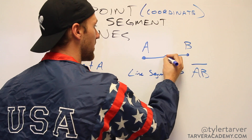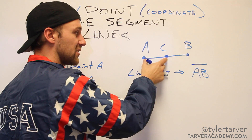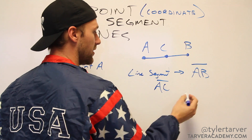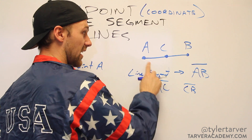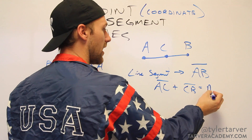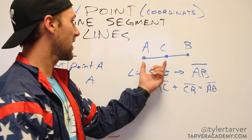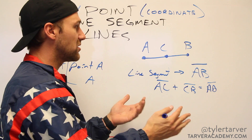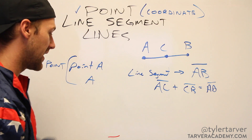Say I had a point in the middle — point C. If I wanted to talk about this distance right here, I would say AC. If I wanted this one, I would say CB. AC plus CB equals AB. You just learned a little bit of geometry! So that segment plus that segment equals the whole thing. Your end points determine which line you're talking about, and that depends on how you label it. So that's line segments.